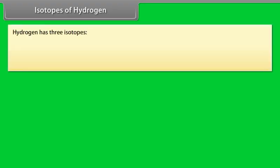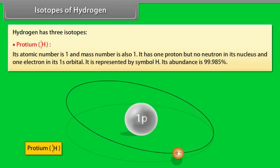Isotopes of Hydrogen. Hydrogen has three isotopes. Protium: Its atomic number is 1 and mass number is also 1. It has one proton but no neutron in its nucleus and one electron in its 1s orbital. It is represented by symbol H. Its abundance is 99.985%.